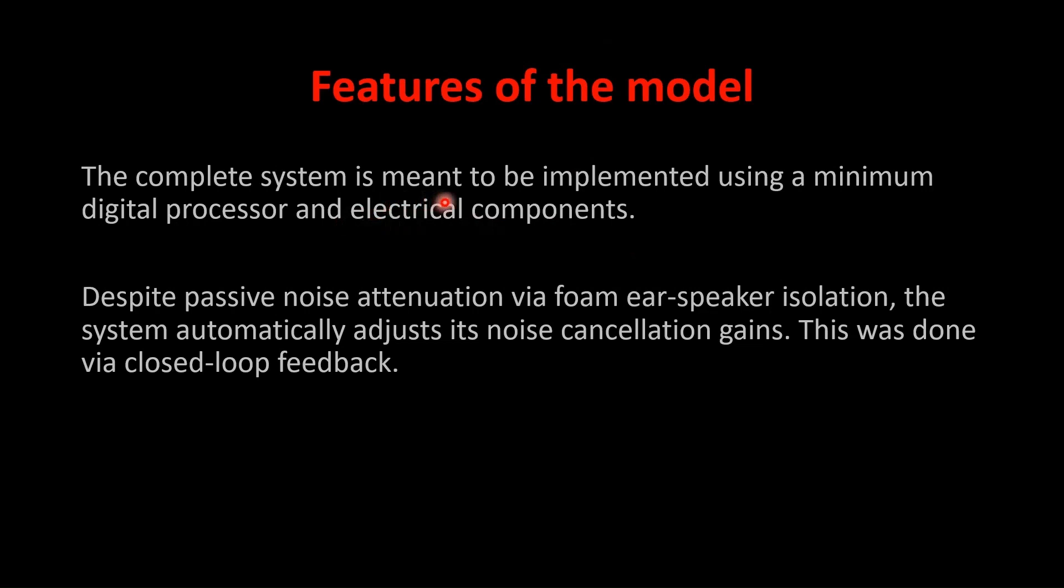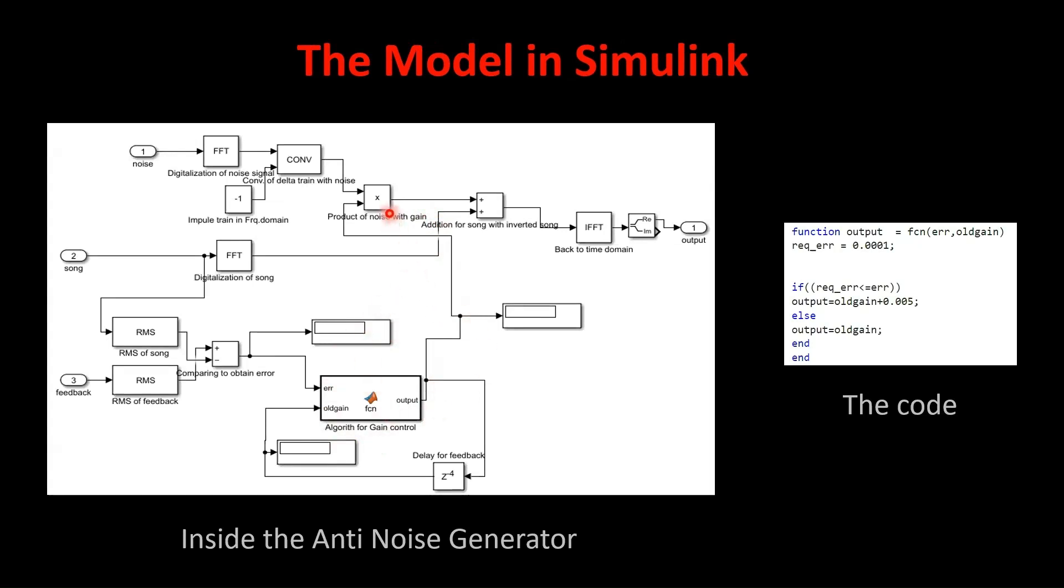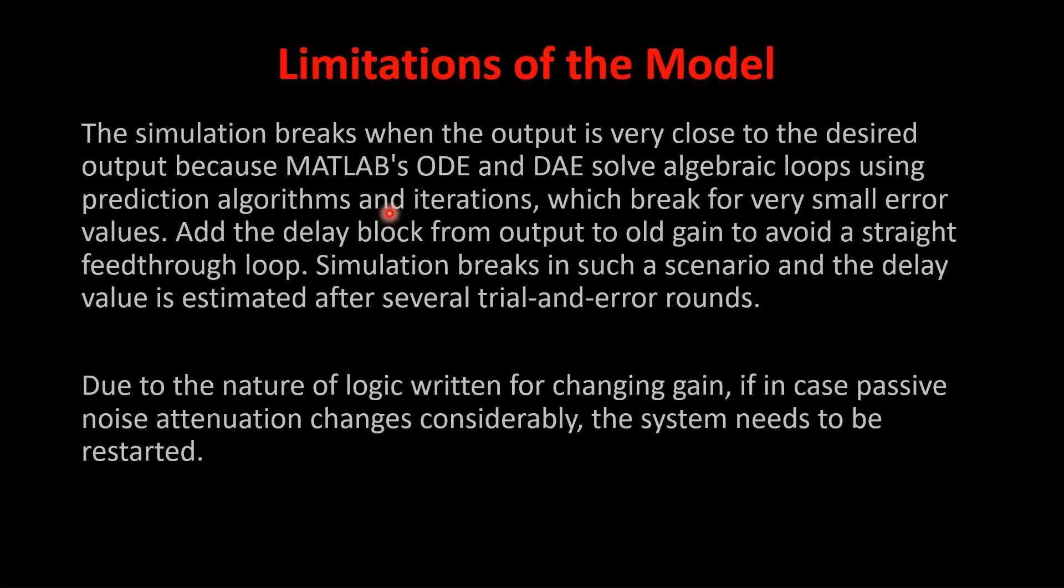Features of this model: The complete system is meant to be implemented using minimum digital processor and electronic components. We didn't want to complicate stuff. We just assumed things like we are not going to take any secondary path or the distance between the mic and the speaker is very less that it's in the same point. And despite passive noise attenuation via foam ear speaker isolation, the system automatically adjusts its noise cancellation gain. This was done via feedback loop. So, for example, if I keep my passive gain as 0.8, then my feedback runs till my active gain becomes 0.8.